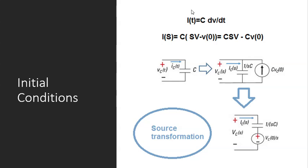Let's go over the equation that finds the current in the capacitor in time domain. The relationship between the current and the voltage in a capacitor in time domain is I equals C dV/dt. You remember this from Linear Circuits 1.